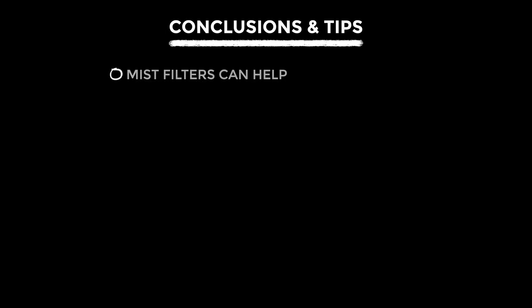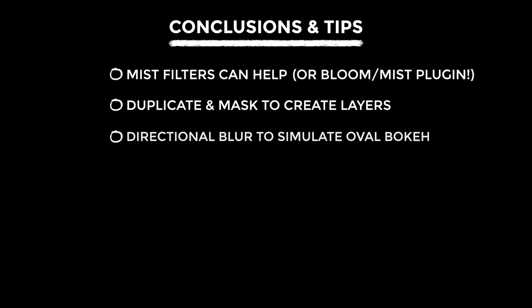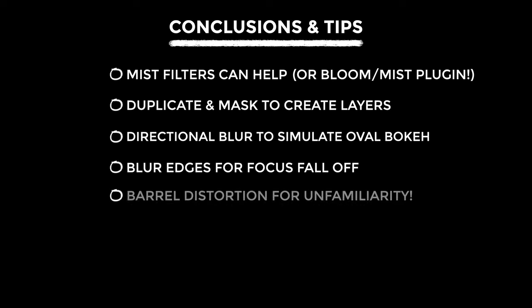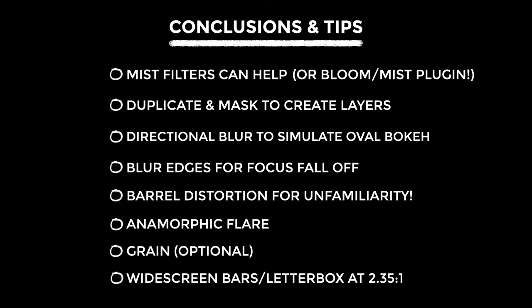Try black mist filters to de-digitize and encourage flaring. Alternatively, try out Eric Lenz's Bloom Mist plugin. Duplicate your shot and use M Roto AI or equivalent to create separate layers so you can edit subject and background independently. Use directional blur to simulate the anamorphic squeezed out-of-focus areas. Add a touch of blur around the edges to simulate the focus fall-off effect. Try adding a touch of barrel distortion to add depth and increase the unfamiliarity of the aesthetic — this doesn't always work, so tread carefully. Add anamorphic flares set subtly; I recommend ones that react to luma rather than needing tracking. Film grain is optional but goes really well with the other effects, adding to the non-digital feel. Lastly, widescreen bars are an obvious but essential step — alternatively, set your project resolution to a 2.35:1 aspect ratio.